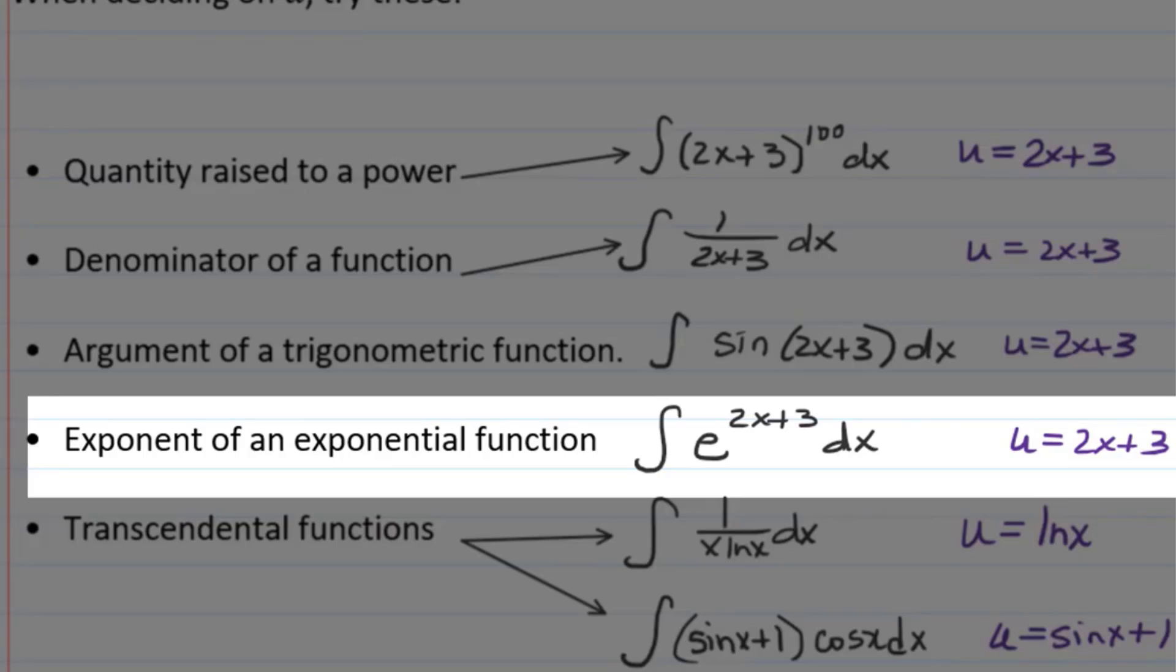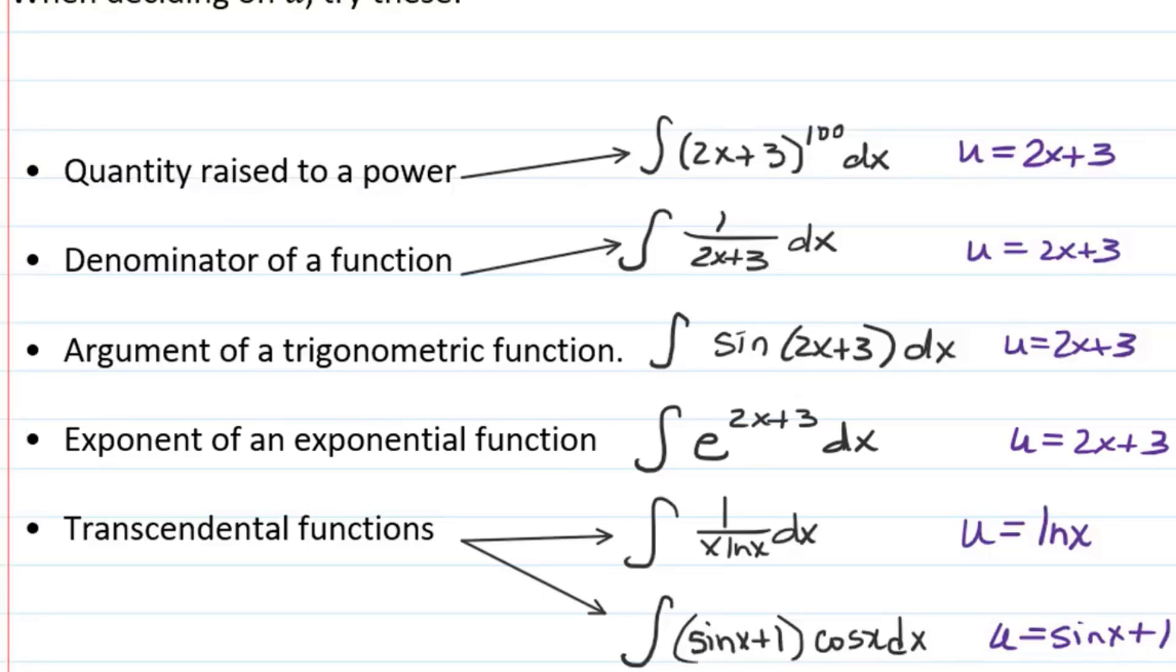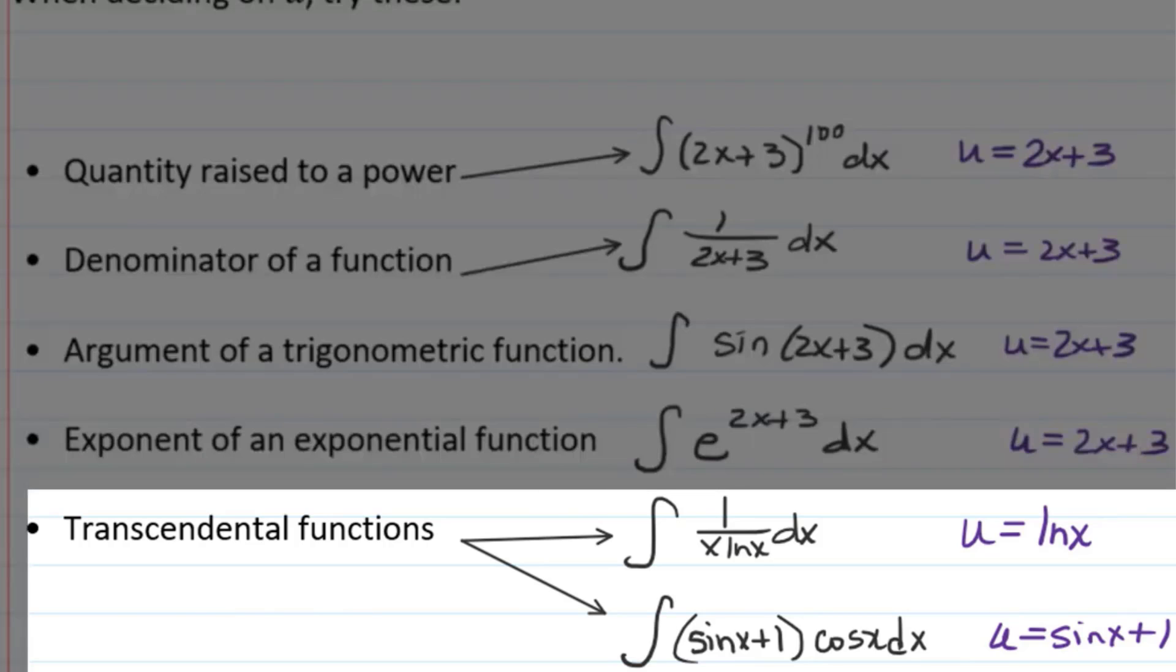You can let U be the exponent of an exponential expression, like E to the 2x plus 3. Let U be the 2x plus 3. Or the last thing is any transcendental functions. So transcendental functions are like trig functions, natural log functions, functions like x to the x power, basically all the weird functions that cannot be written as a combination of addition, subtraction, multiplication, division, and exponentiation. In that case, we are going to try letting U be one of those functions. For example, in the integral of 1 over x natural log of x, we would try letting U be the natural log of x. Or in the case of sine of x plus 1 times cosine of x, either let U be sine of x plus 1 or U be cosine of x.